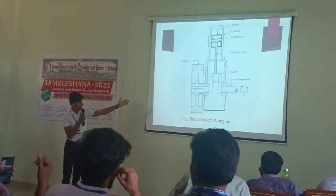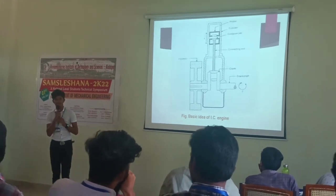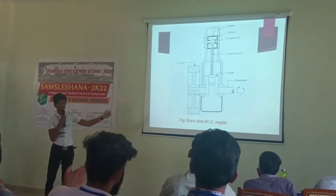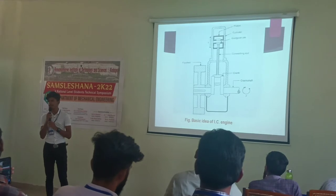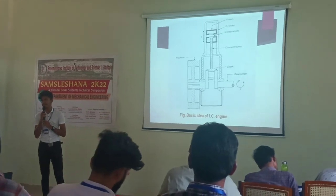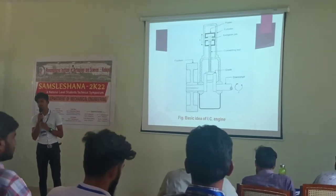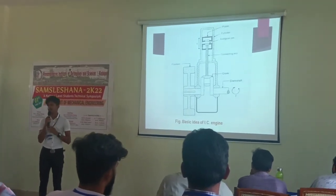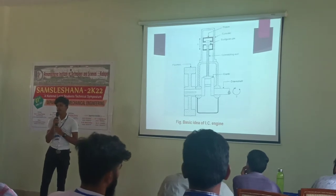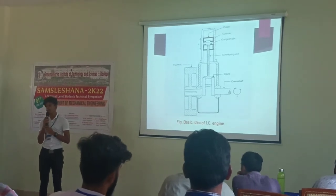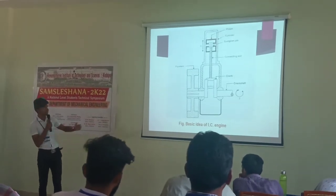This is the basic idea of the internal combustion engine, and the diagram is as follows. It consists of a crank, crankshaft, and connecting rods, inlet valves and outlet valves, and spark ignition. For spark ignition engines, we have the spark plug, and for fuel injection engines, we have the fuel injection compression system.